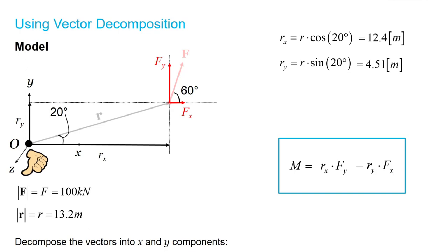For our forces, we have to use our angle of 60 degrees. So, Fx will be equal to F cosine 60 degrees, and Fy will be F sine 60 degrees, giving us 50 kilonewtons and 86.6 kilonewtons, respectively.